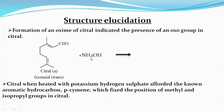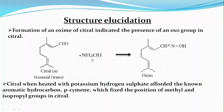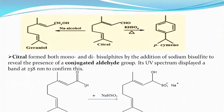Now let us determine the structure of citral. First, formation of an oxime: citral reacts with hydroxylamine yielding an oxime, indicating the presence of an oxo group in citral. When heated with potassium hydrogen sulfate, it yields p-cymene, giving the skeletal structure. On reduction with sodium and alcohol, it gives an alcohol known as citronellol, where the aldehyde group is converted into an alcoholic group. Citral forms both mono- and disulfites by addition of sodium bisulfite, revealing the presence of a conjugated aldehyde group.